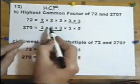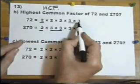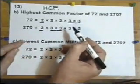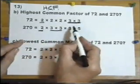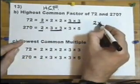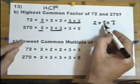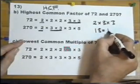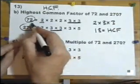So what I've underlined is what's common to both lists. In this list, there may well be three 2's. But common is a 2 there, a 2 there. 3 times 3, 3 times 3. And we call those the common factors. Therefore, if we multiply those numbers out, 2 times 3 is 6. 3 times 6 is 18. That gives us the highest common factor for the two numbers 72 and 270.